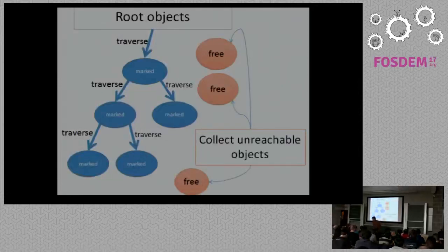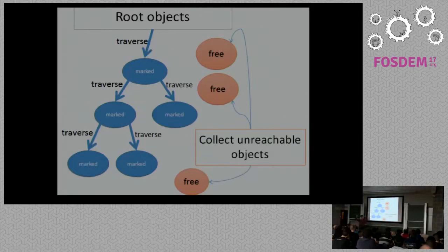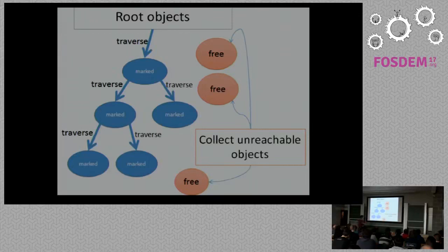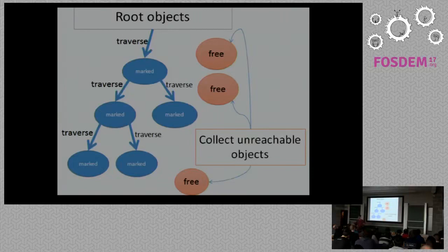When we trigger GC, we start with the root objects — things like classes and constants that don't get garbage collected ever. We start with something like the Rails.application object, then look for all references to it and traverse down the object graph. We traverse until we've marked everything that references each other. Any object at the end that hasn't been marked is free because nothing's referencing it. Pretty simple.